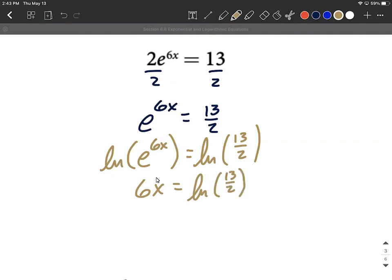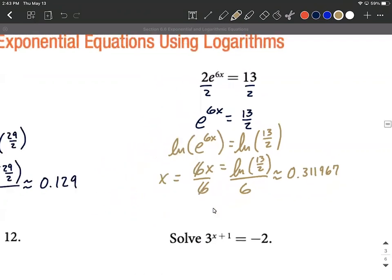To get x by itself, we need to get rid of that constant that's being multiplied. So that'll put x on one side by itself. This is an exact solution, but this is also one of those functions that we can utilize our calculator for and get an approximation. I got this to be 0.311967 as an approximation versus the exact solution.